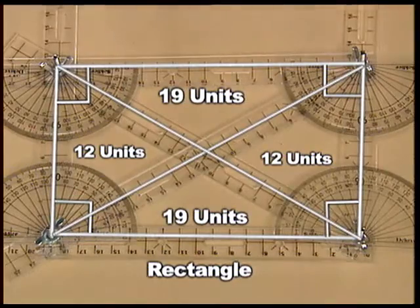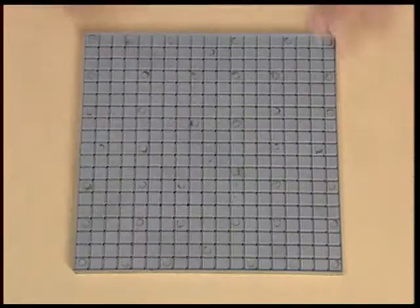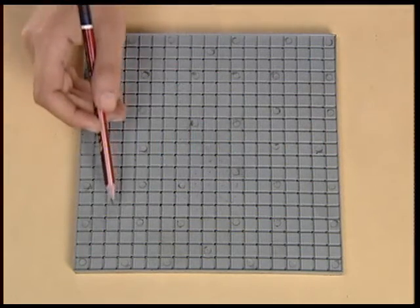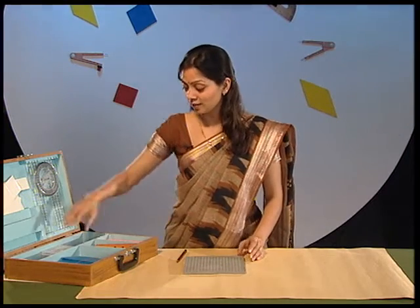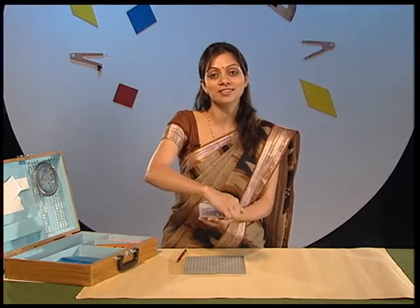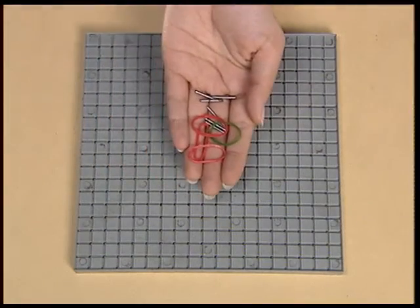Hello friends, I hope that you had tried to perform the activities on triangles and quadrilaterals using these plastic strips. From the kit box we also have a small plastic board called a geoboard. We will use this geoboard to represent various planar shapes and also to find the area of various regular and irregular figures. This can be done using the rubber bands and dowels present in the small plastic box.